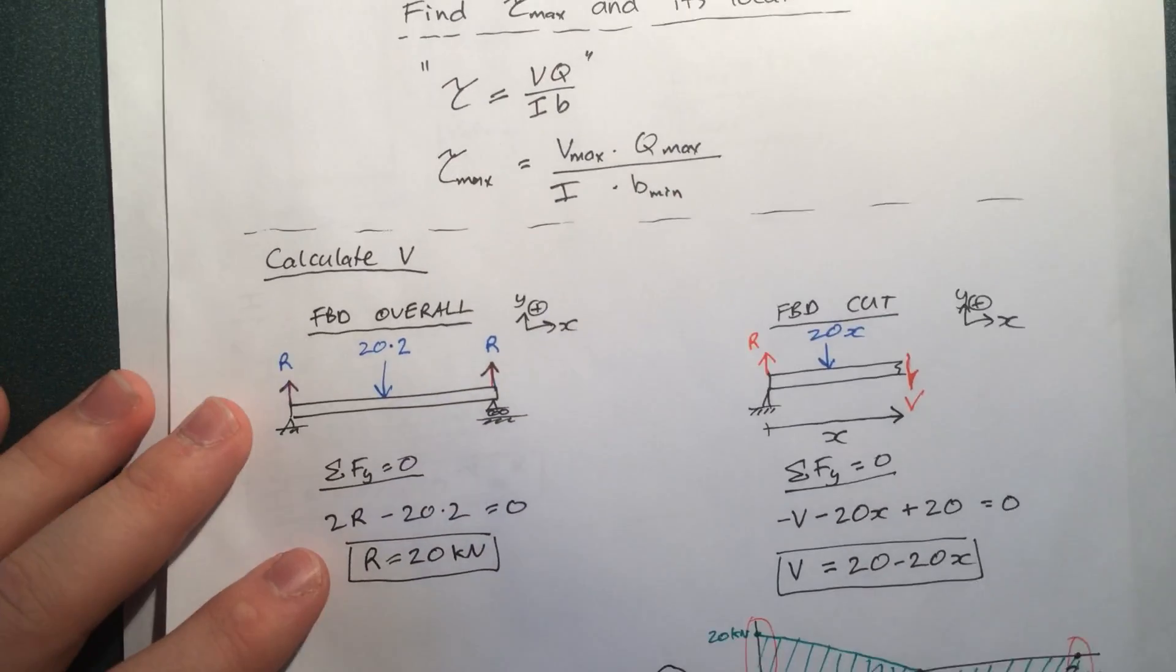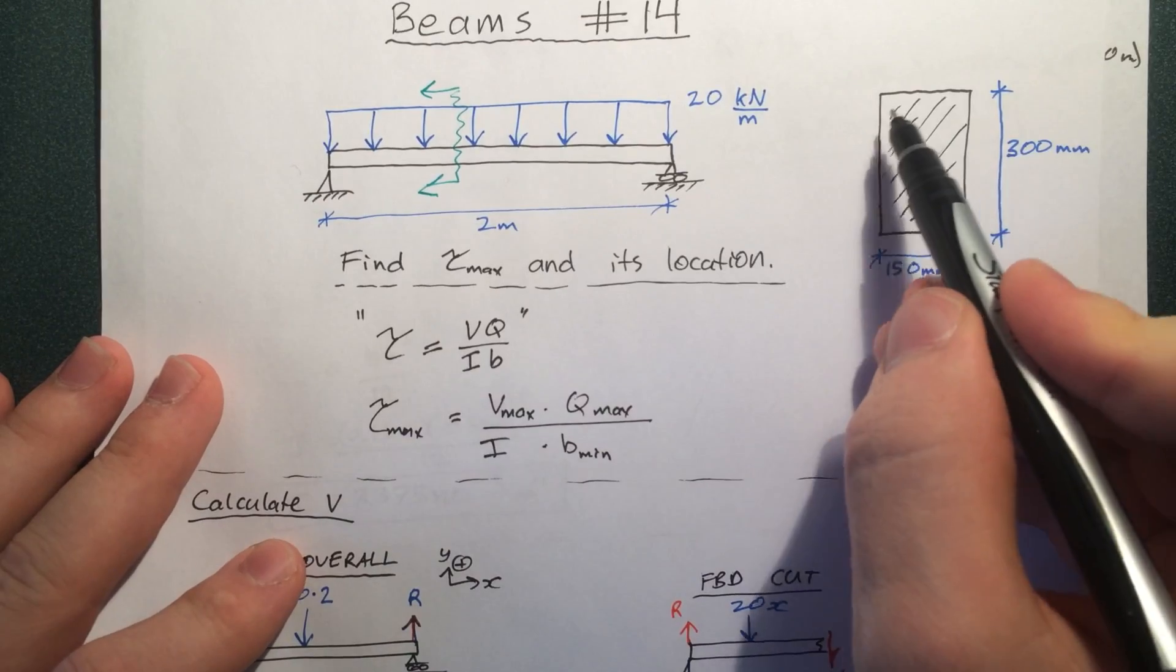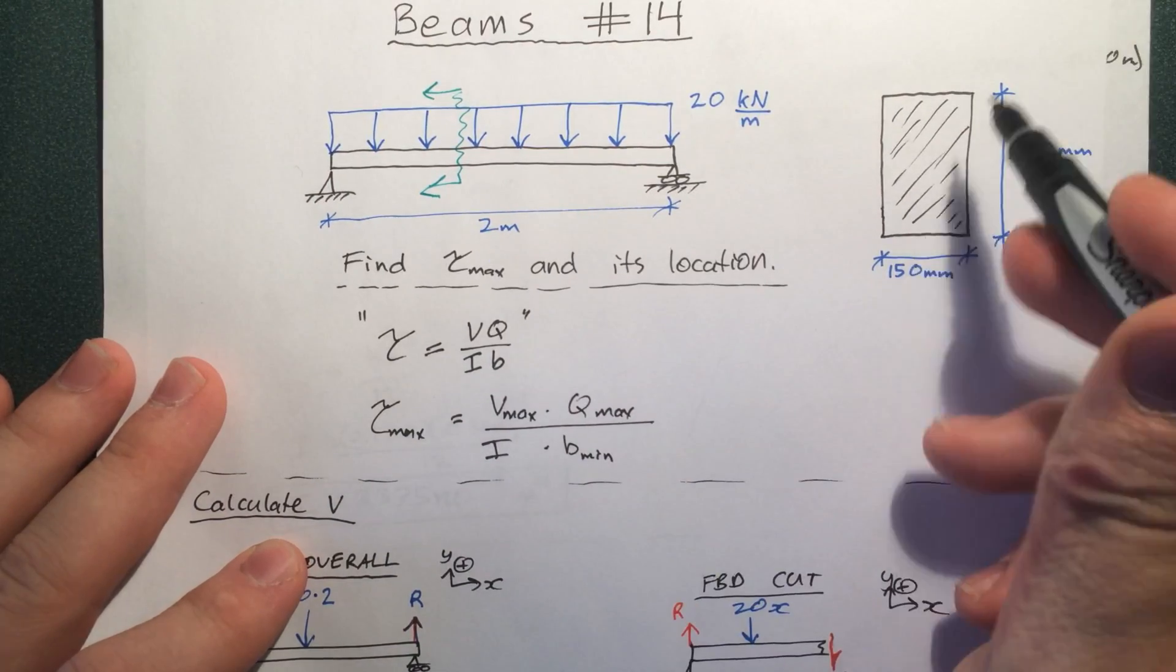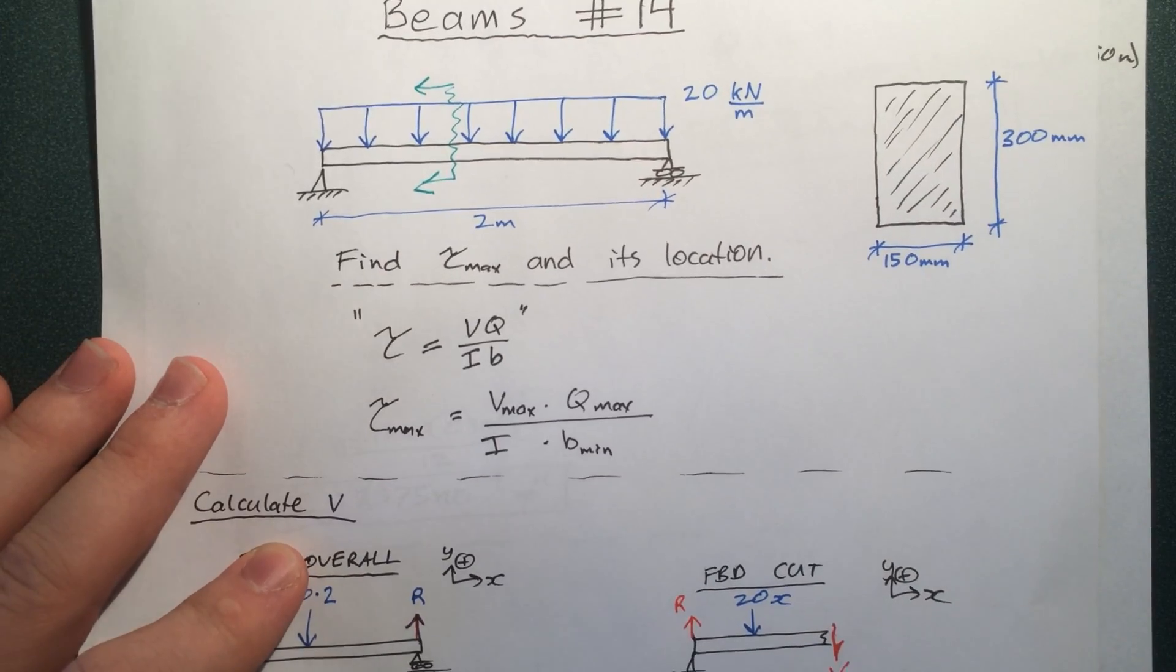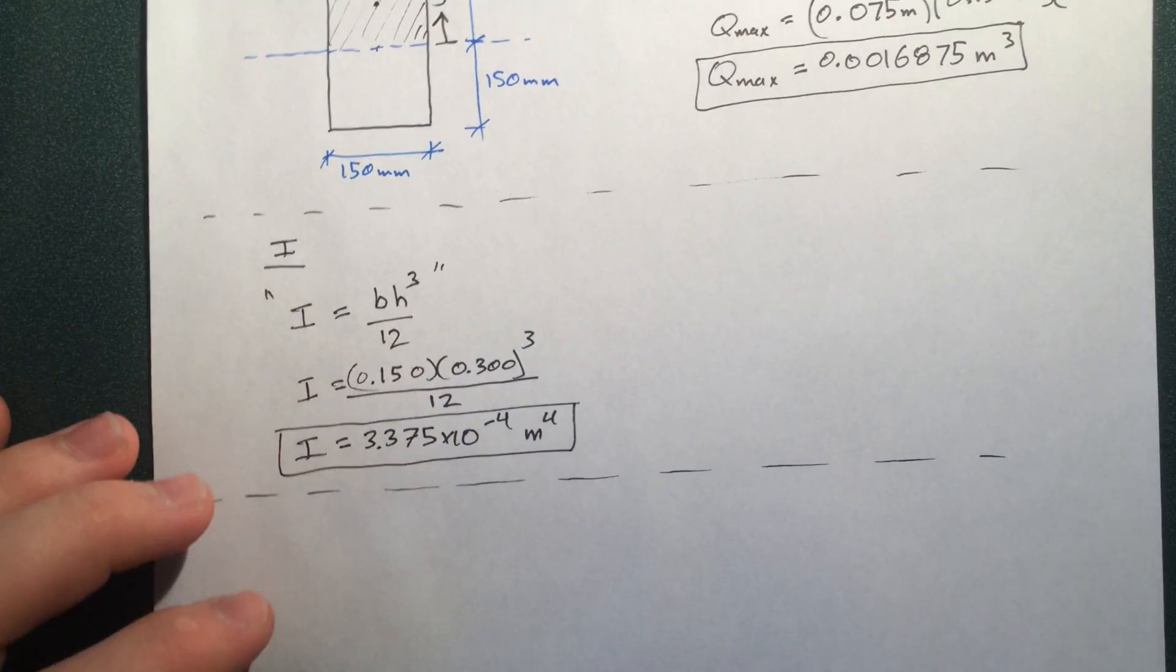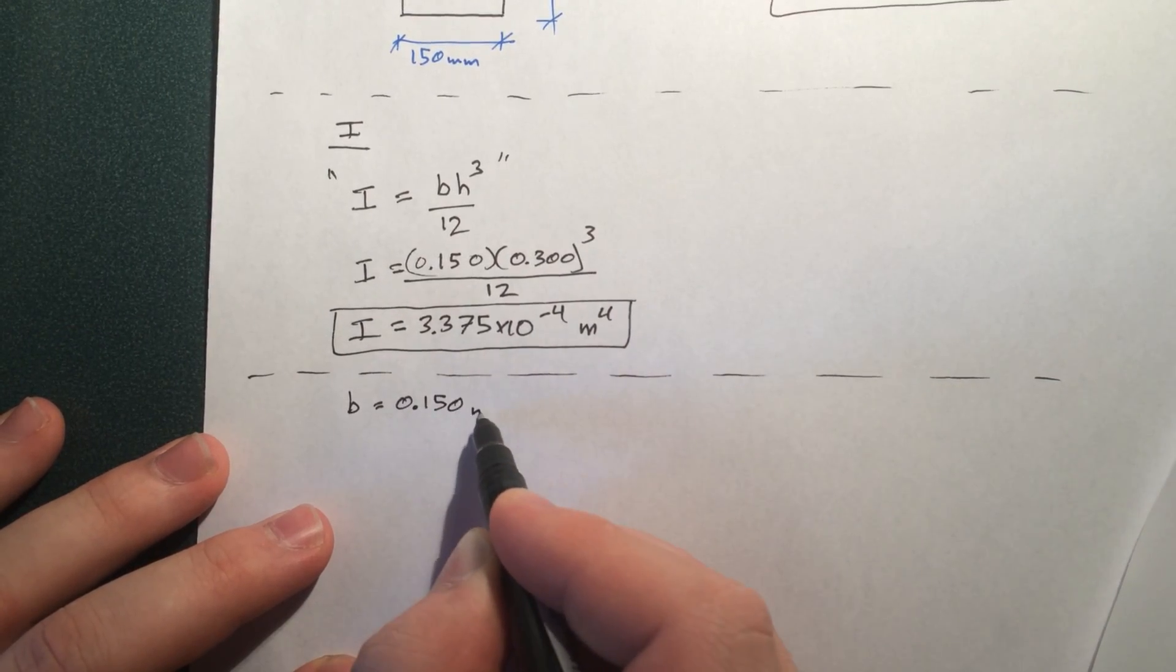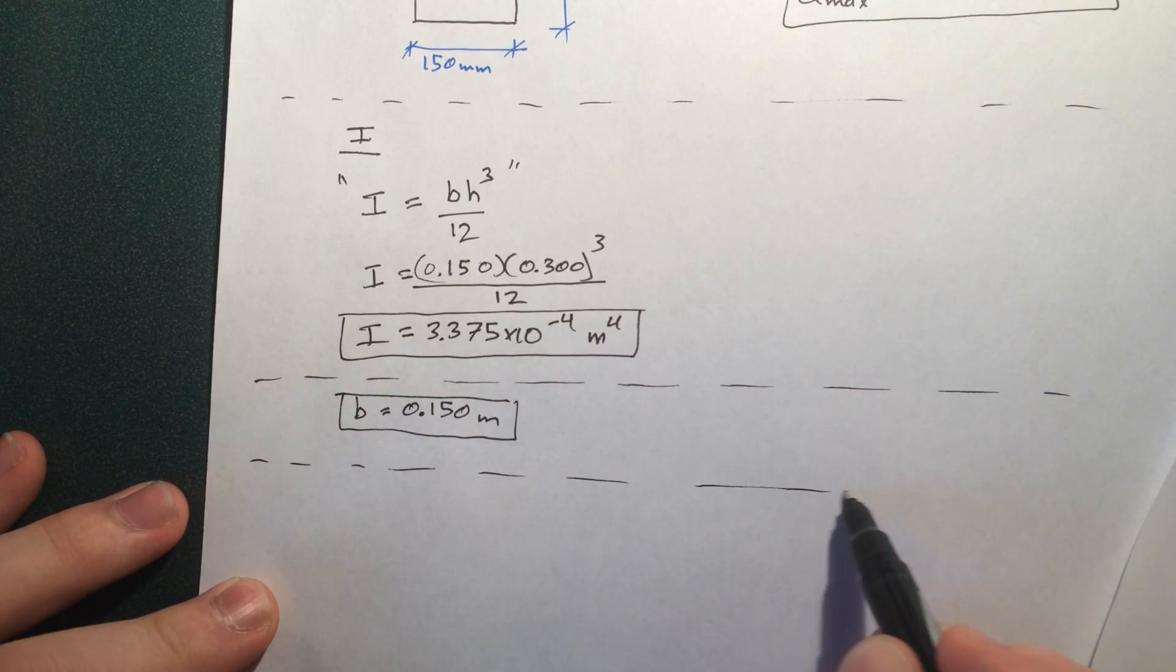B minimum, that's what we want. But B is just this width here. And the width is constant. So, the minimum B, well, that's just going to be B. There's no specific point where it's bigger or smaller. B equals 0.05 meters.